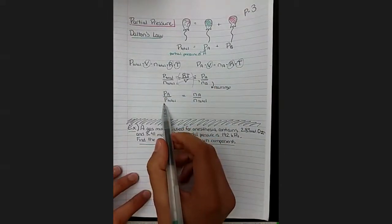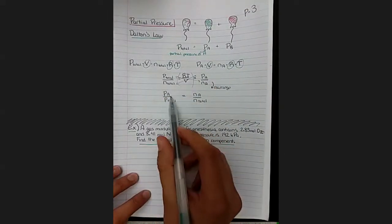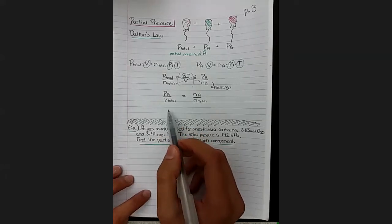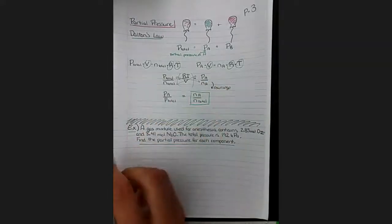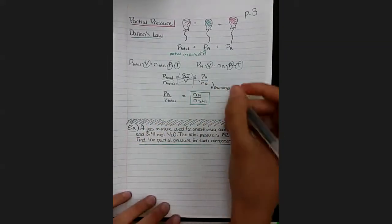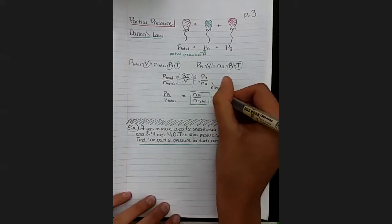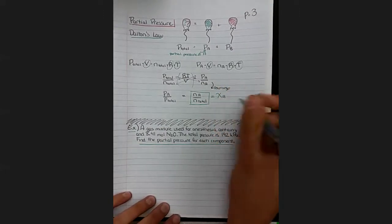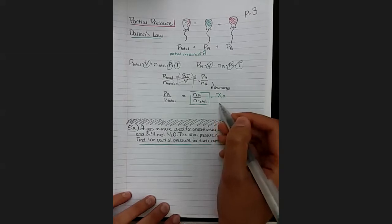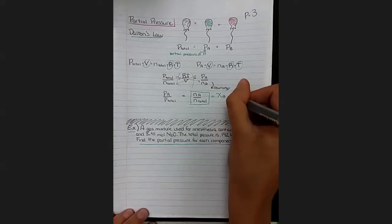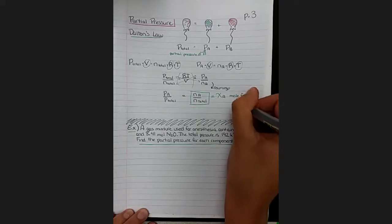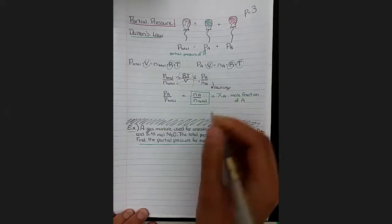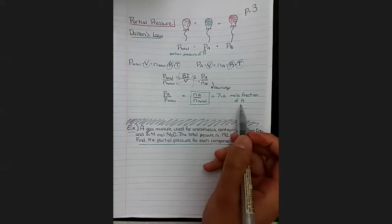Notice that these are ratios of the same thing, of the same component over the total for two different variables. So this particular ratio, the mole ratio, this is a special one, and this has its own variable. We represent that with this Greek letter chi, which looks like an X. So chi A, that's the mole fraction of A. That tells you how many moles out of all of the total moles are represented by that piece.